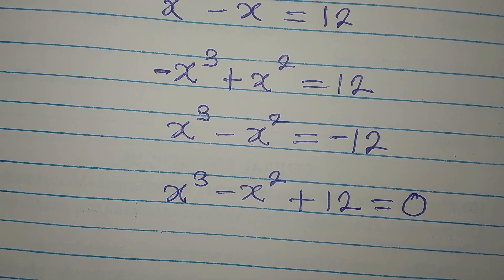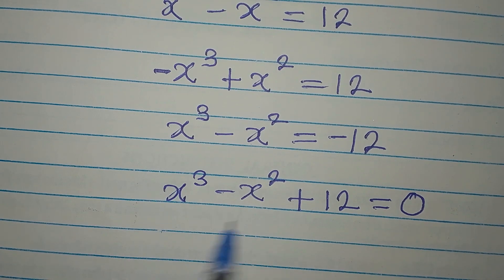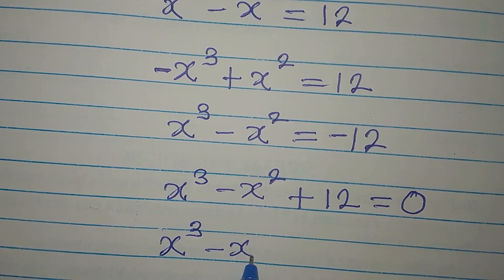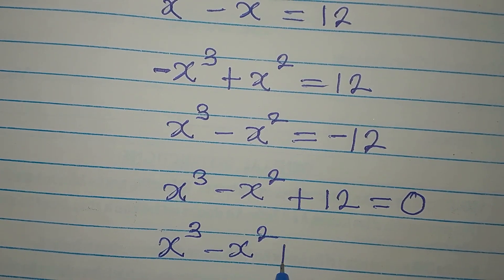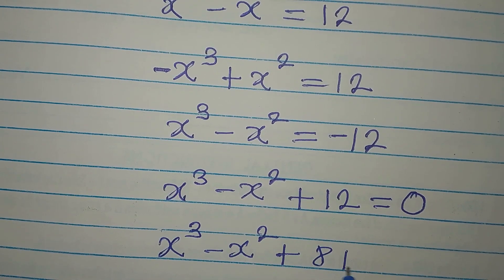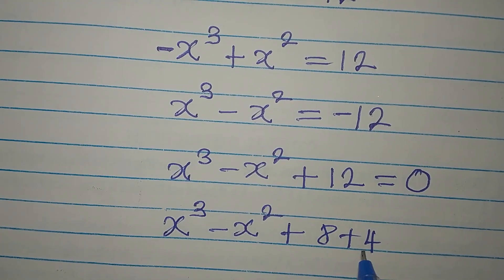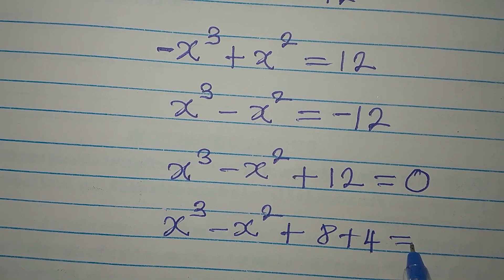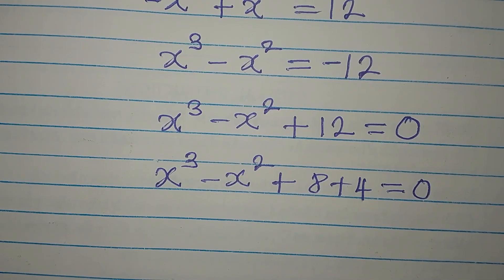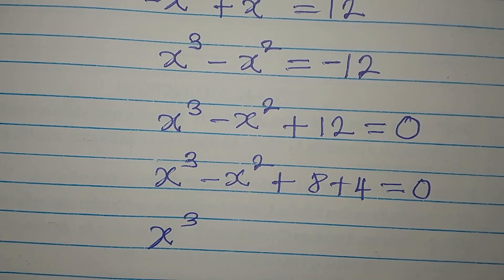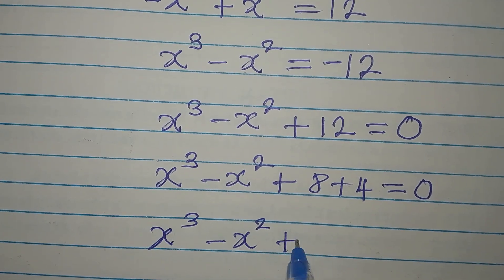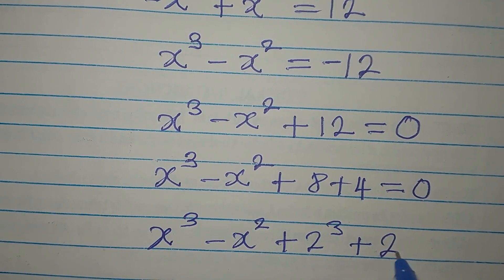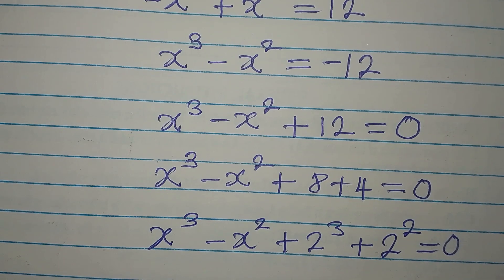How do I want to deal with this? I want to express this 12 in a useful form. So I'll write x to the power of 3 minus x to the power of 2 equals 12, and I'm going to break 12 into 8 and 4. Because 8 can be written as 2 to the power of 3, and 4 can be written as 2 to the power of 2. This is now equal to 0.